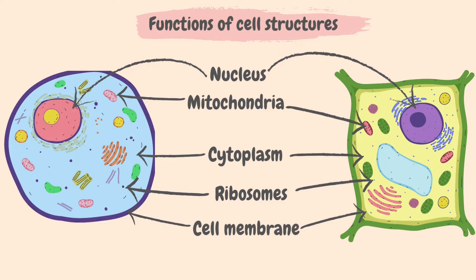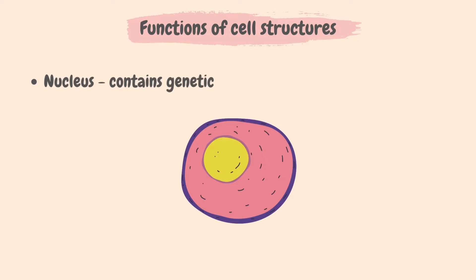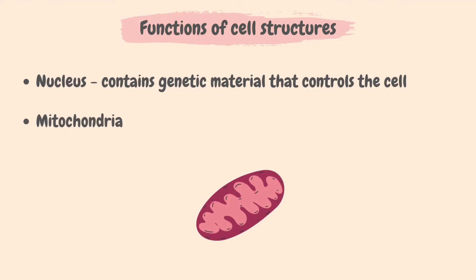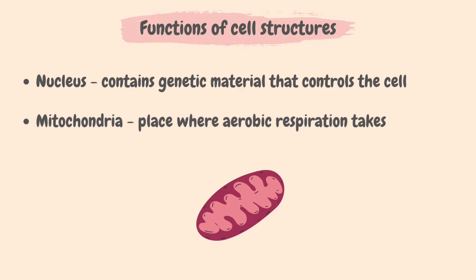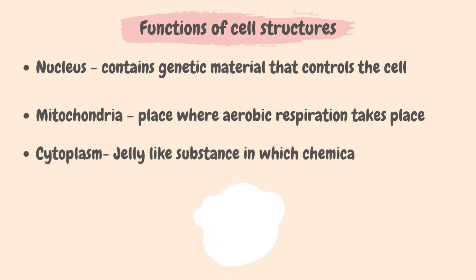Now we will look at the functions of these parts of a cell. The nucleus contains genetic material that controls the cell — it stores DNA and coordinates many of the activities that take place within the cell. The mitochondria is where aerobic respiration takes place and provides the necessary energy for the cell's survival and functioning. The cytoplasm is a jelly-like substance in which chemical reactions take place, and it supports the organelles of the cell.